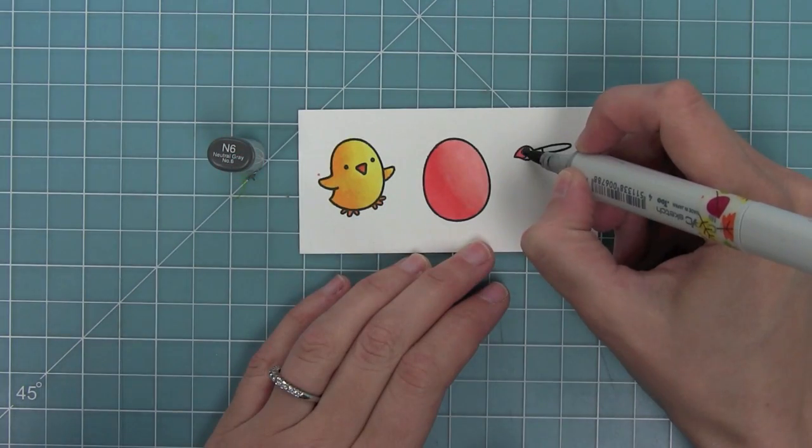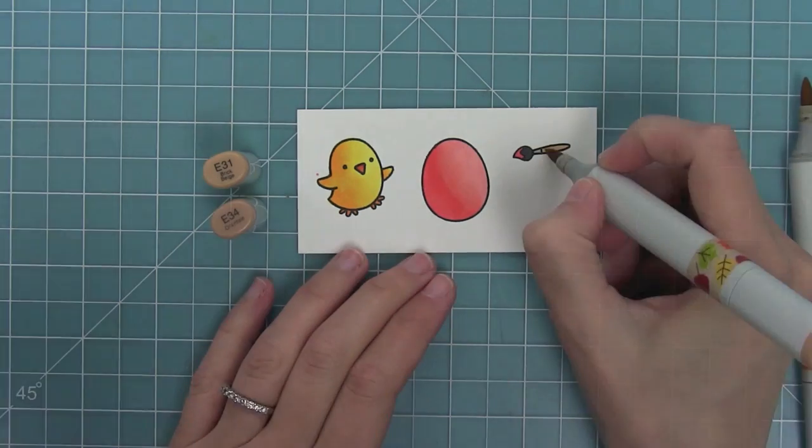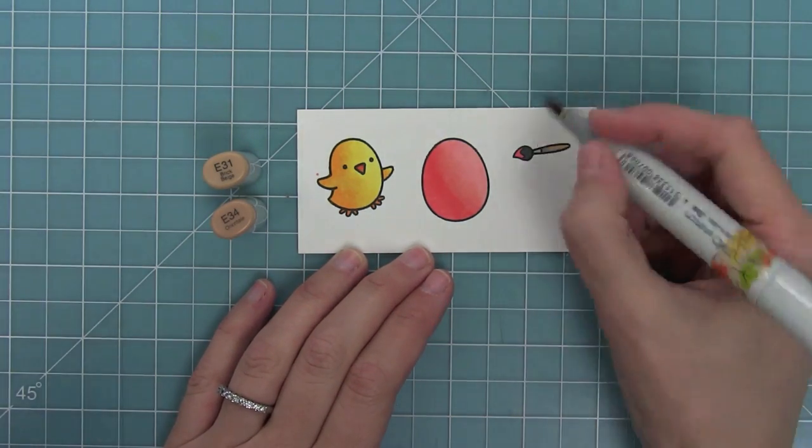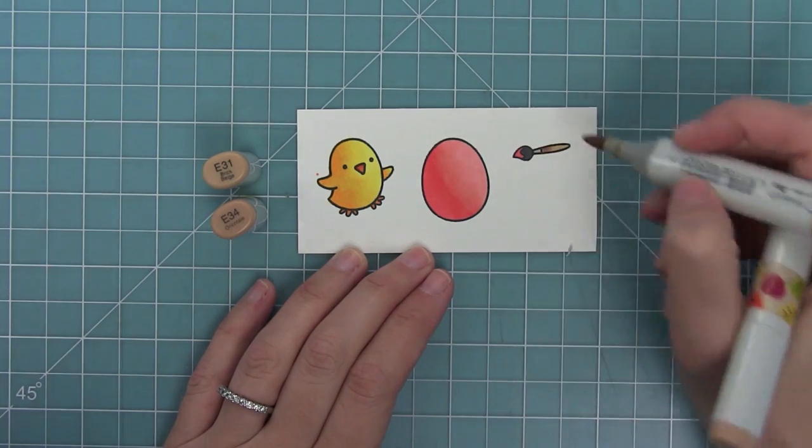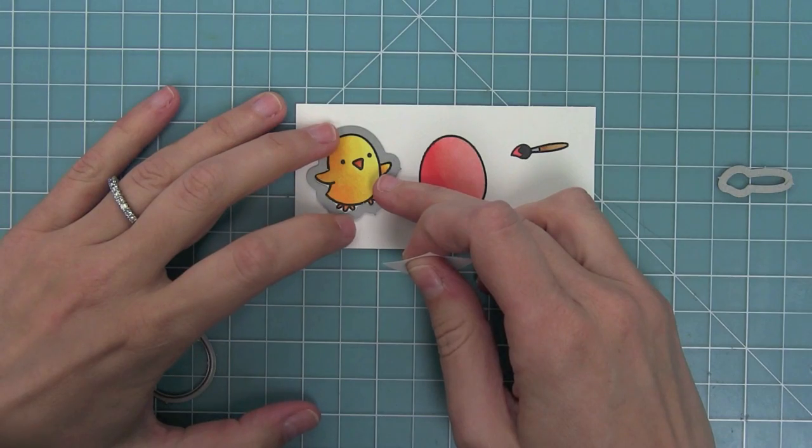Next I'm going to color in the little paintbrush. I just love these colors for the paintbrush—that Toner Gray looks like a little metal piece there, and E31 and E34 really kind of look like wood. Now I can use the coordinating dies to cut out all of these images.